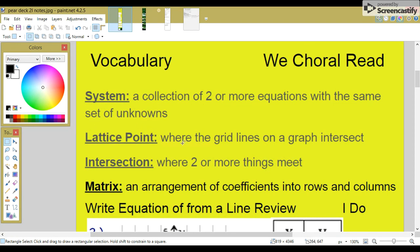Lattice point: where the grid lines on a graph intersect. Intersection: where two or more things meet. Matrix: an arrangement of coefficients into rows and columns.